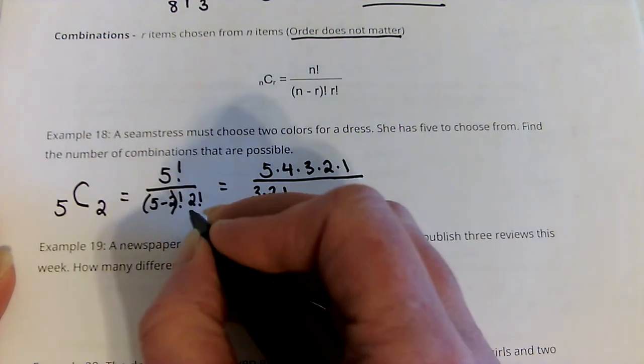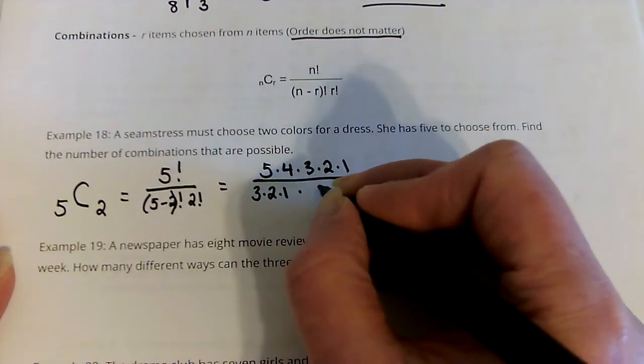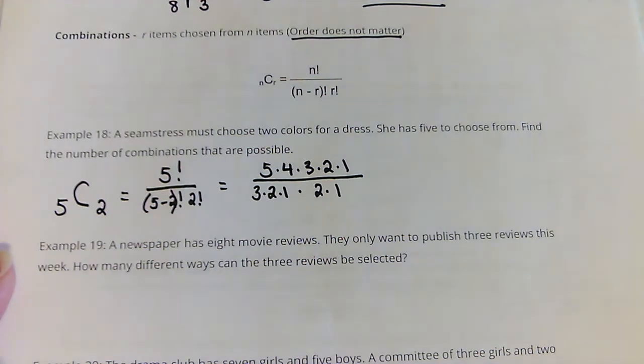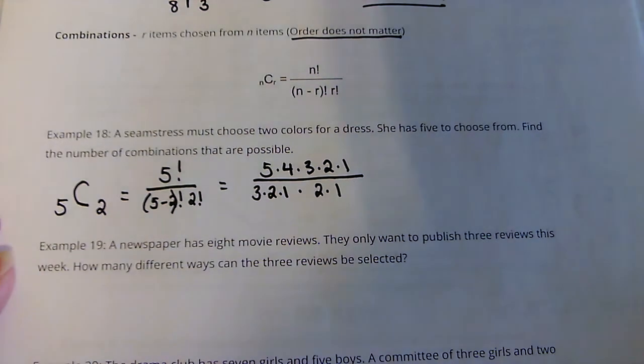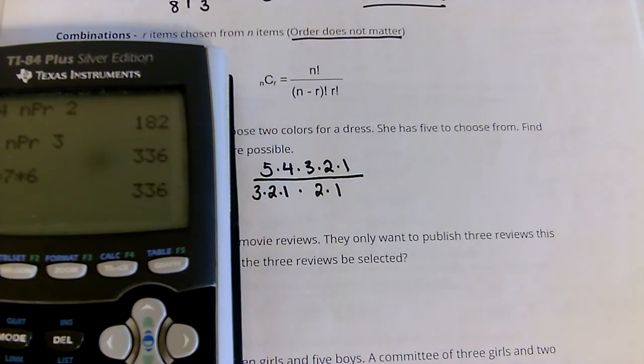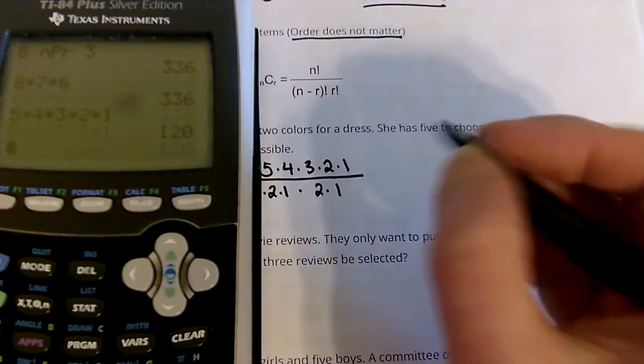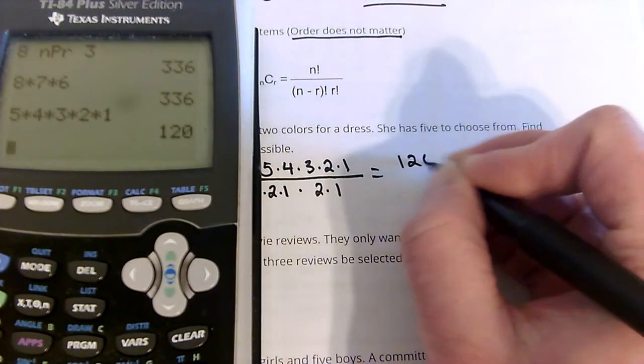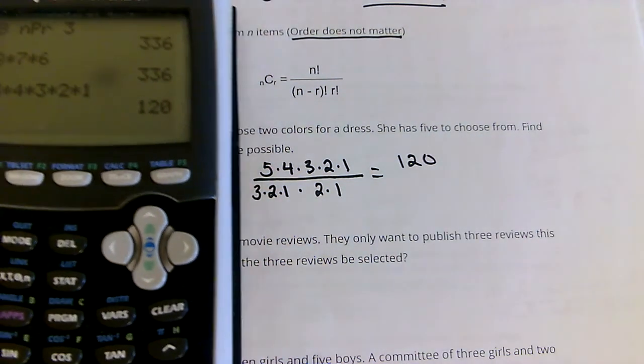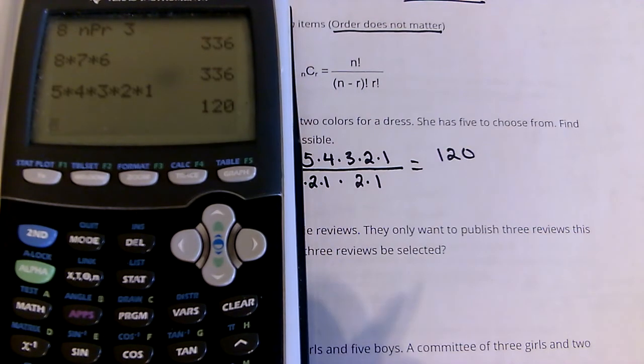So, that would be 5 times 4 times 3 times 2 times 1. 5 minus 2 would be 3, so 3 times 2 times 1, but I'd also have 2 factorial. This could get very complicated.